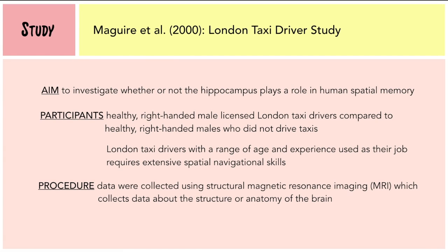The first study that corresponds to Principle 1 is a study done by McGuire et al., most commonly known as the London Taxi Driver Study, conducted in the year 2000. It investigated whether the hippocampus plays a role in spatial memory. London taxi drivers were used as participants because their job requires extensive spatial navigational skills. The brains of healthy right-handed male licensed London taxi drivers were compared to the brains of healthy right-handed males who did not drive taxis, using an MRI scan.